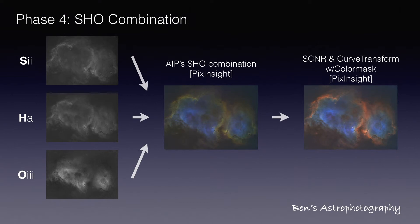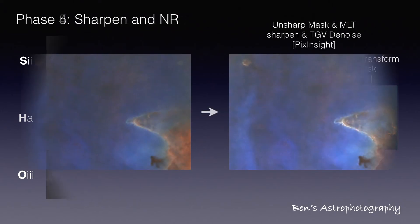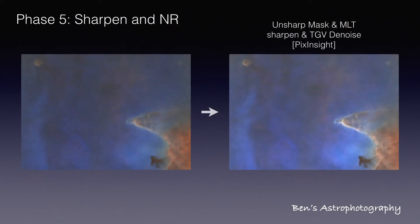Once the color is good, I'll go ahead to phase five — do some sharpening in PixInsight to squeeze out more details. Then TGV denoise to reduce color noise before the next stage.